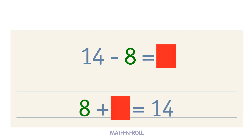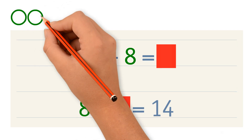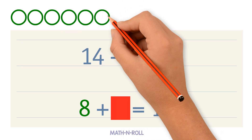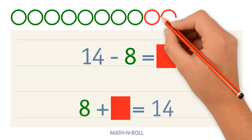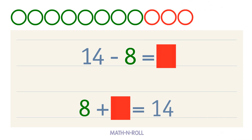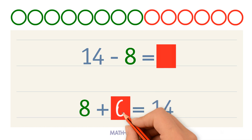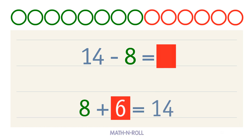Use the model to solve. We have 8 circles. How many more circles do we need to make 14? 1, 2, 3, 4, 5, 6. We needed 6 more pieces, so 8 plus 6 equals 14. 6 is our blank, so 14 minus 8 equals 6.